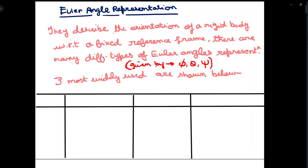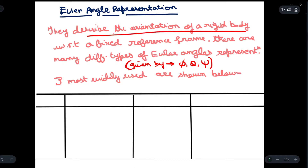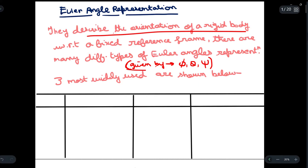Today we are going to understand what is Euler angle representation. Euler angles describe the orientation of a rigid body with respect to a fixed reference frame. There are many different types of Euler angle representations, and the Euler angles are given by phi, theta, and xi. The three most widely used Euler angle systems are shown below.